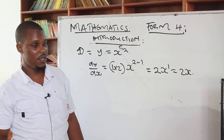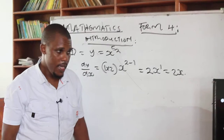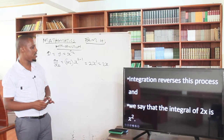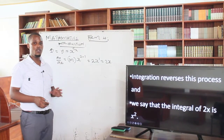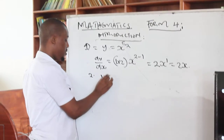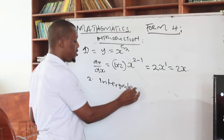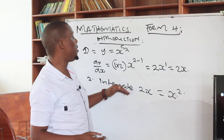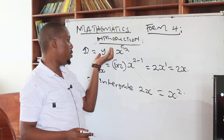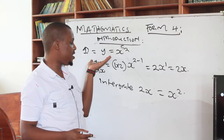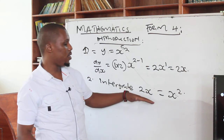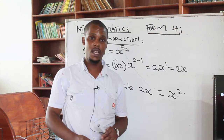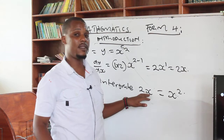So dy/dx is going to be 2x. Then integration reverses this process — that is what I want you to understand. So if this is the derivative, and I tell you to integrate 2x, your answer is supposed to be x squared. We can see that integration is the reverse of differentiation. The function was y equals x squared, you differentiated to get 2x, then I tell you to integrate 2x and you obtain x squared. The integral of 2x is x squared.